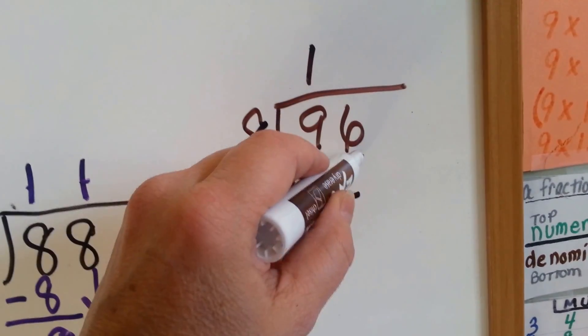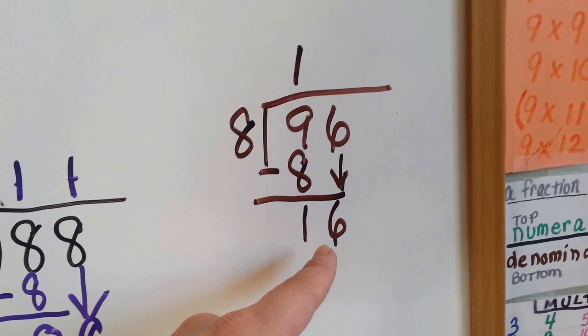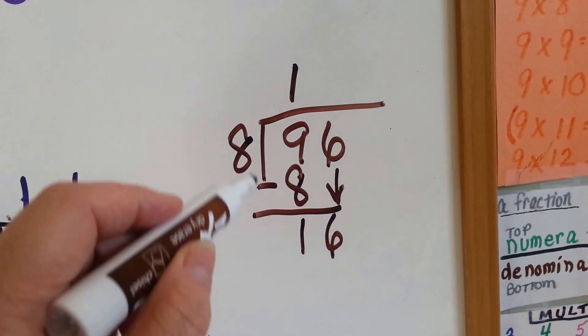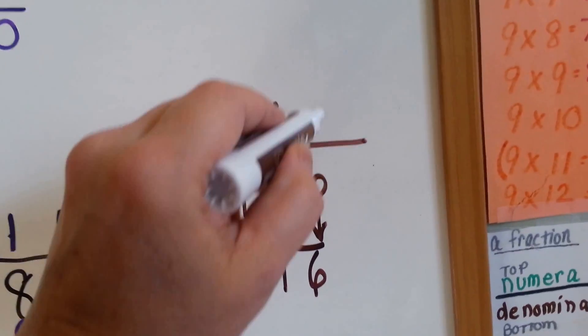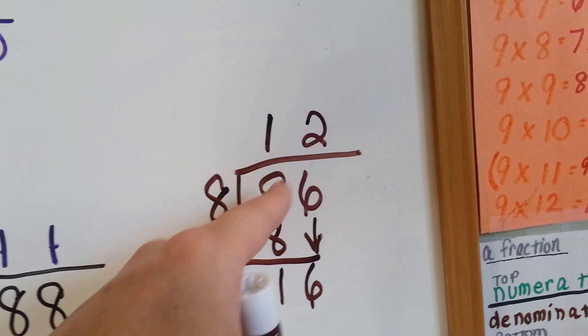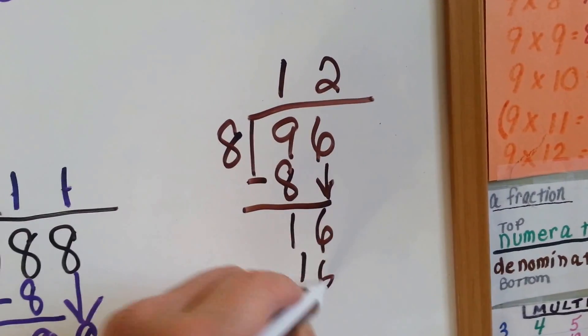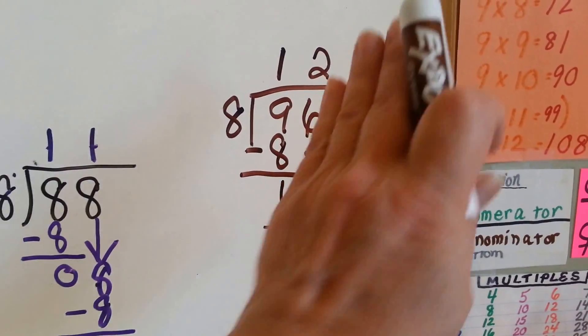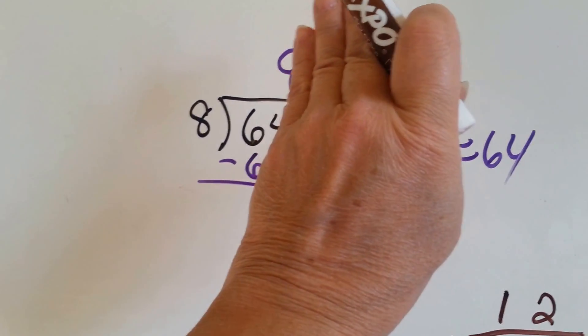Now, can 8 fit into 1? No. So it's the 6's turn to come down. 8 goes into 16 how many times? Do you know? 1, 2. So we're going to put a 2 above the 6, and 8 times 2 is 16. We're going to do our subtraction and get 0. See how we did an extra step coming down? Because 8 could fit into 9 one time. Where over here, 8 couldn't fit into the 6, so we had to use the whole 64.